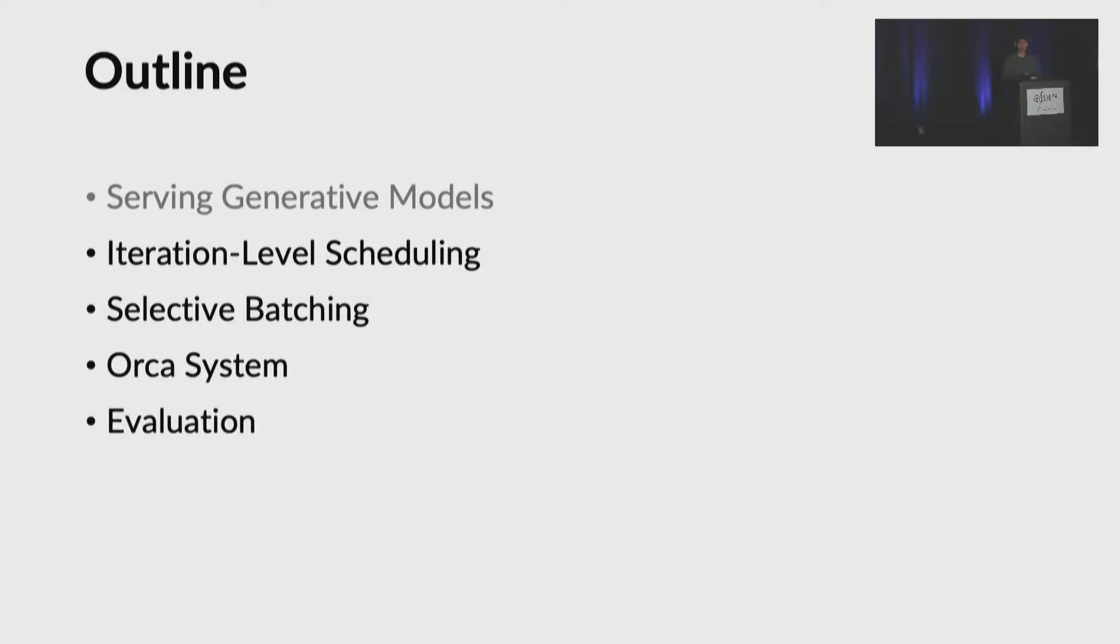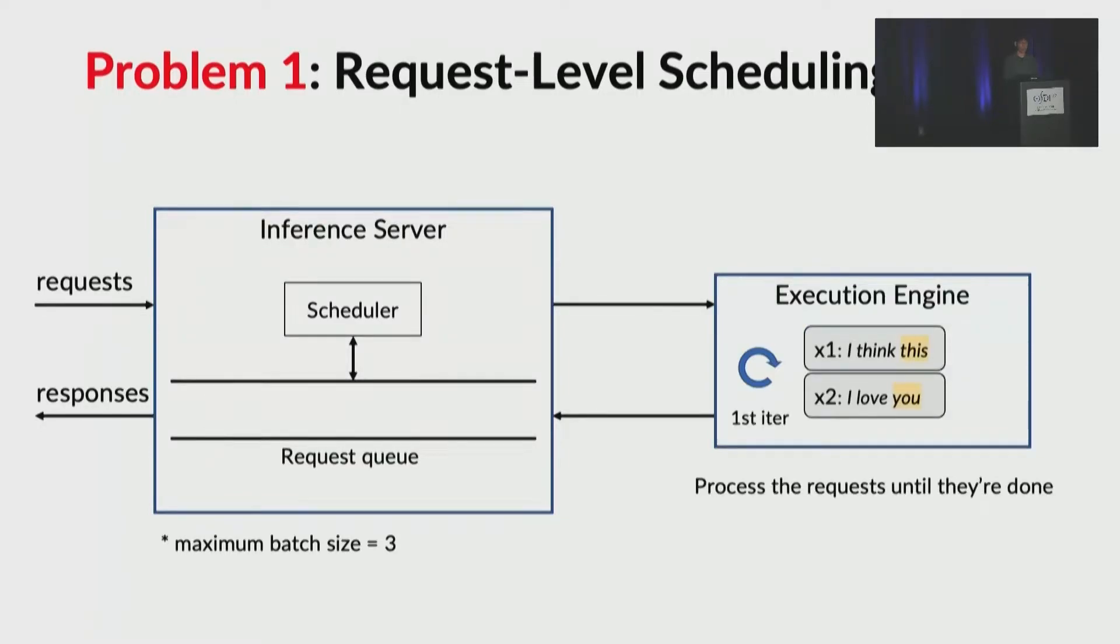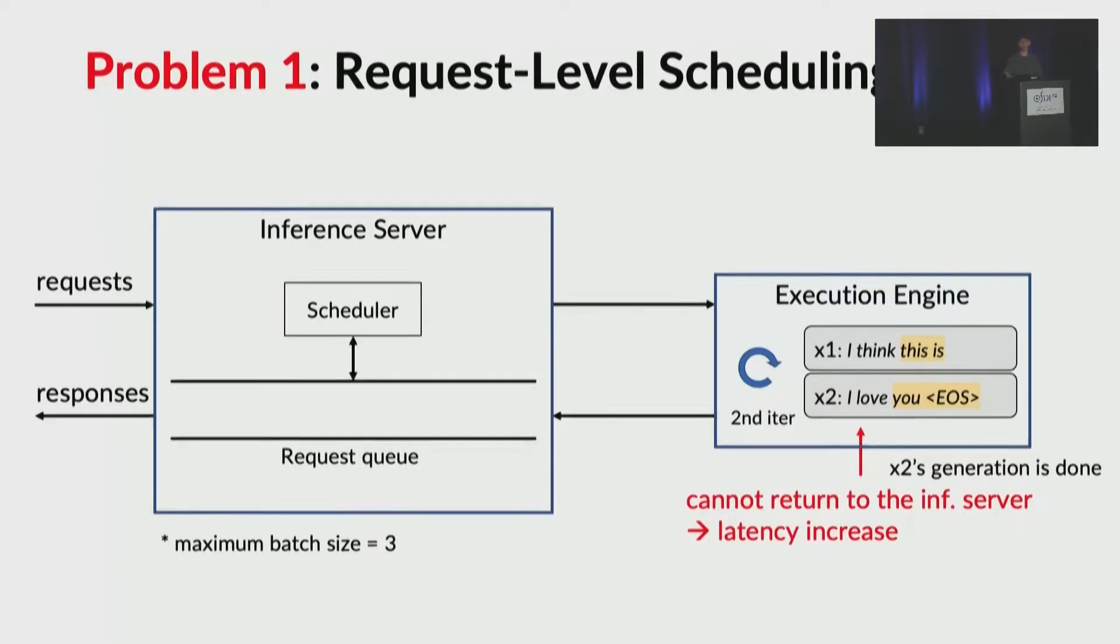I'll now talk about two main problems we identified with the current system and our solutions to address them. The first problem is that the inference server interacts with the execution engine at the request level. Let me explain what I mean by that. In the current system, once the execution engine receives the batch of the request, it processes them until they are done. Now, suppose the engine finishes request x2, but it cannot return the response of x2 back to the inference server. The engine can only return the response after it finishes processing the entire batch. Therefore, the latency of x2 increases unnecessarily.